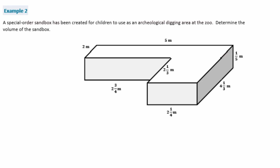Example 2: a special-order sandbox has been created for children to use as an archaeological digging area at the zoo. Determine the volume of the sandbox. We're back to finding the area of composite figures, so we need to break it into two different rectangular prisms — either this way or across like this, having one in the front and one in the back. It typically doesn't matter.